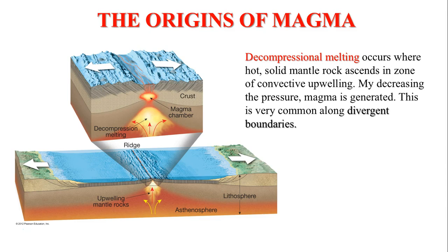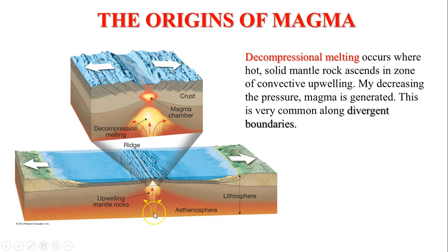This is called decompressional melting. When solid mantle rock moves upwards, the pressure decreases. Once you decrease that pressure, the rock is still hot, so taking the pressure off causes the rock to actually melt. That's decompressional melting, and once it occurs, magma is generated.